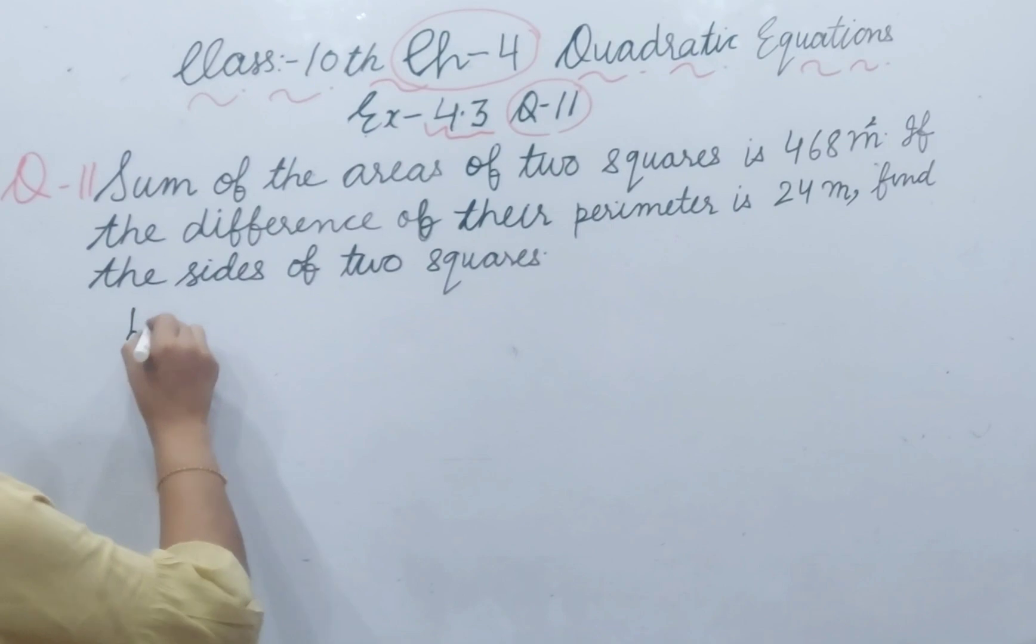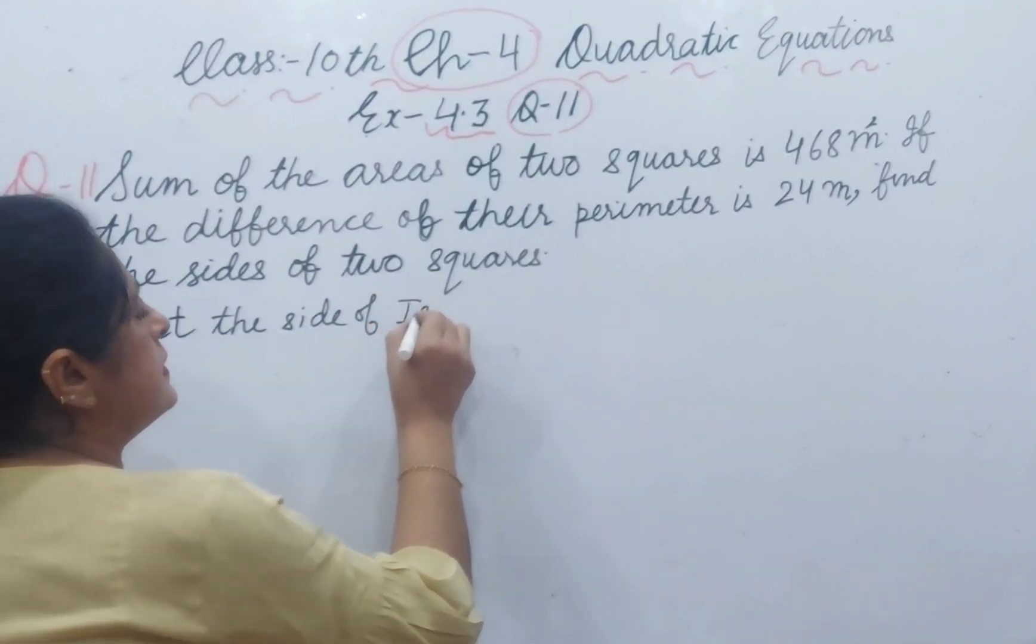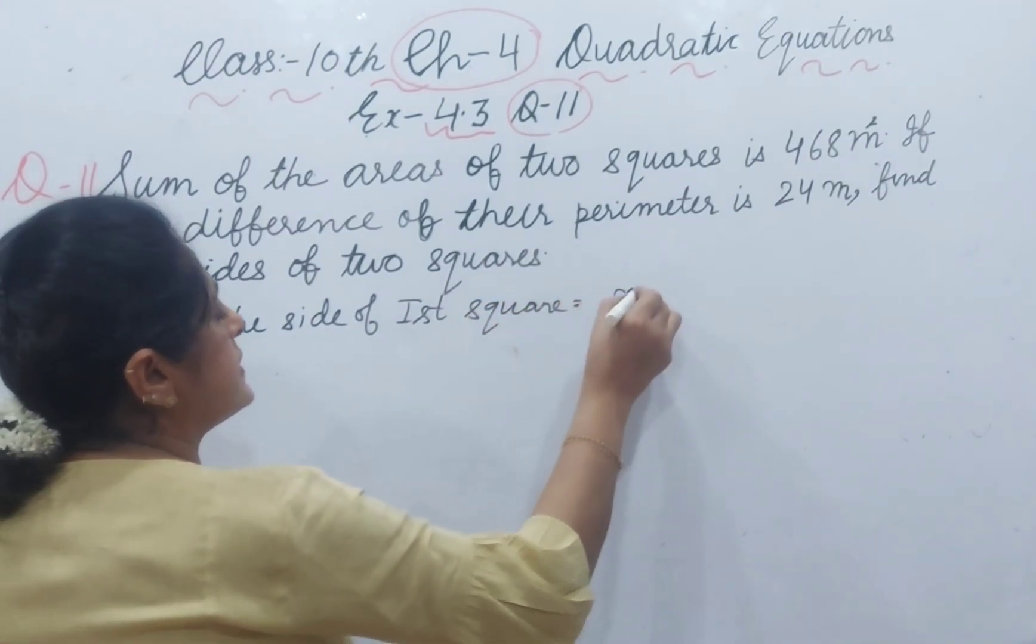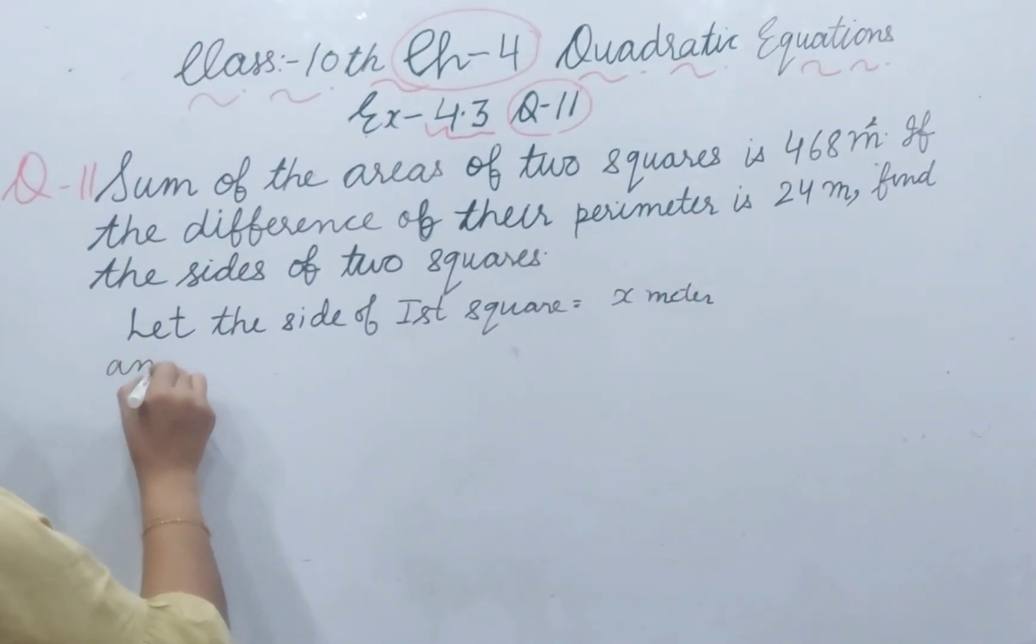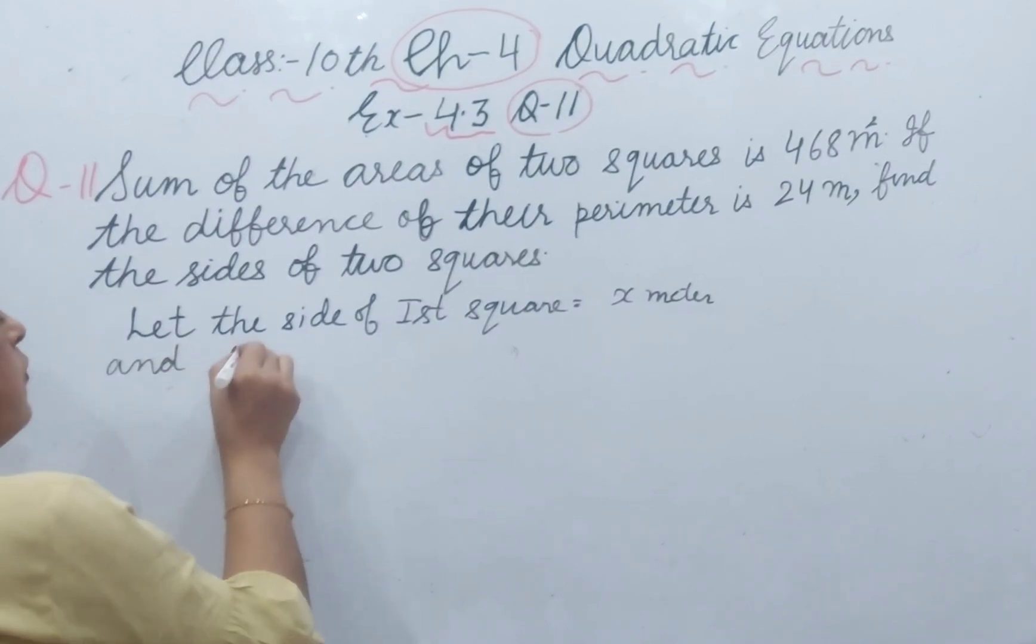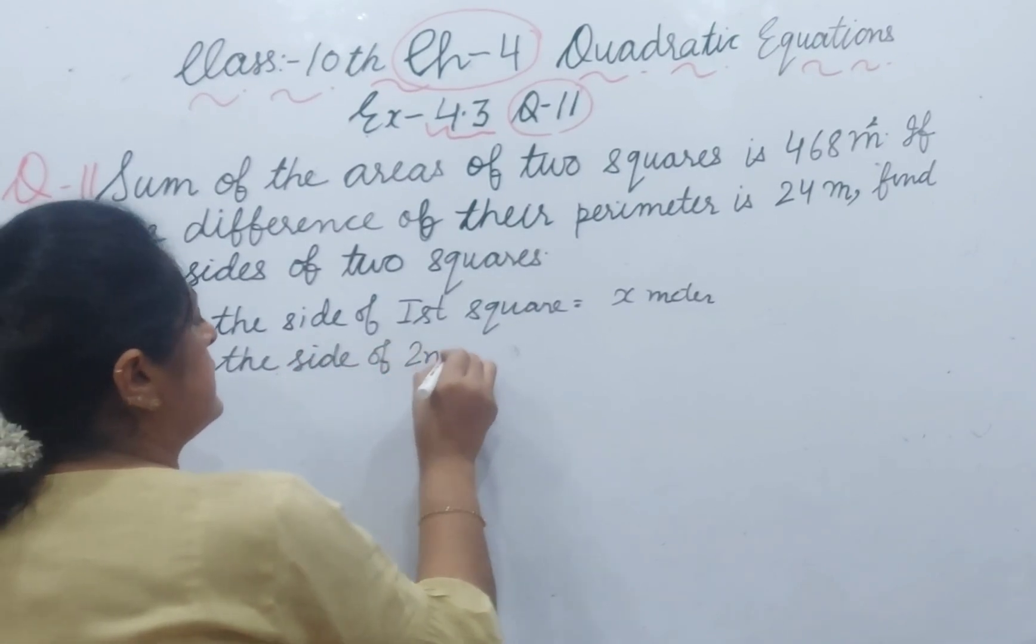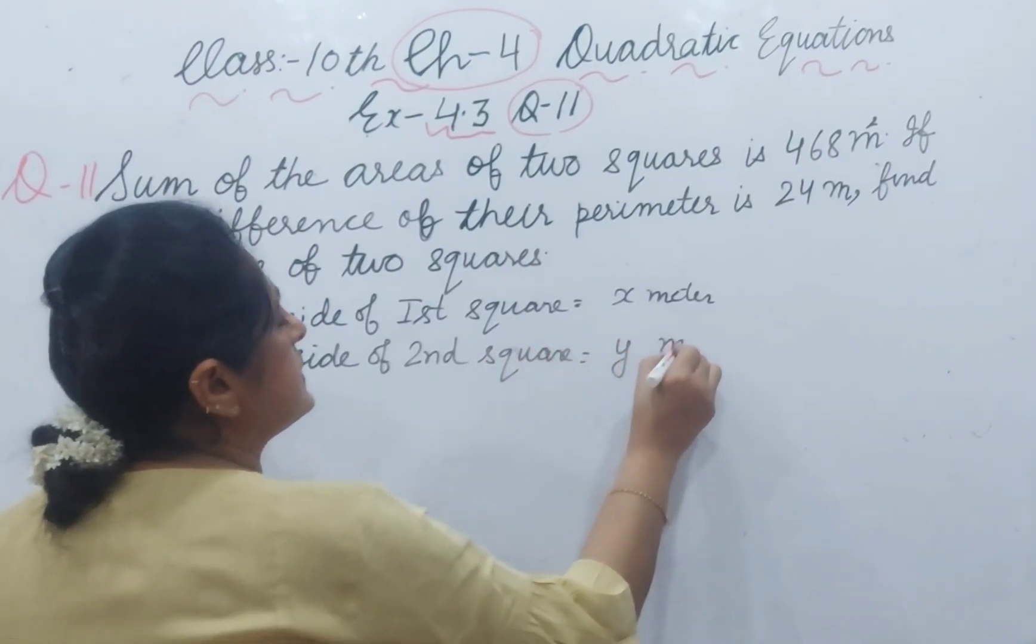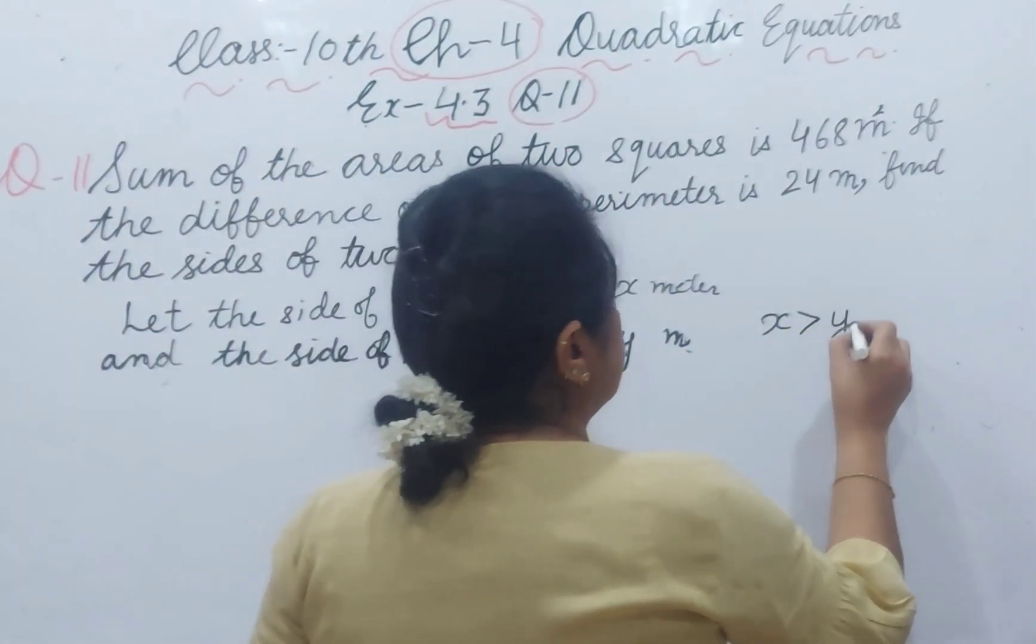Let the side of first square be x meter and the side of second square be y meter, where x is greater than y.